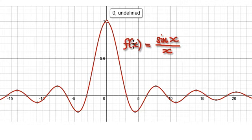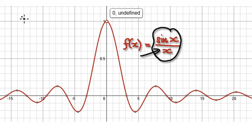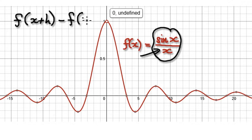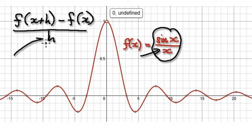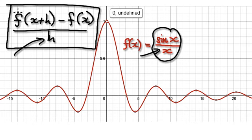My point is that there are many instances where you want to find out the value of something as x approaches zero — it's very useful. For example, take f(x+h) minus f(x) over h. When h is zero, it's meaningless. But there are many instances where we want to find out the limit of this as h approaches zero.